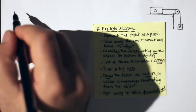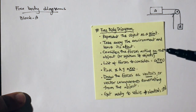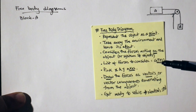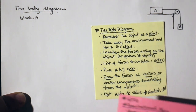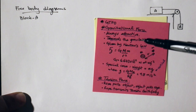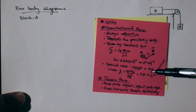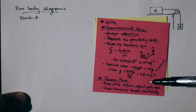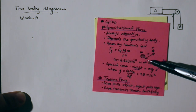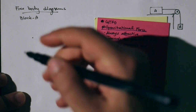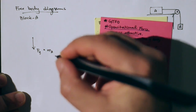I'm going to draw the free body diagrams, starting with box A. I'll represent the object as a point, remove the environment and leave only its effects, and consider only the forces acting on the object — not by the object. The first force to consider is gravity. Since we're near the surface of the earth, the gravitational force is represented by the weight, equal to the mass of the object multiplied by g = 9.8 m/s², pointing downward. So that's the force of gravity, equal to the mass of A times g.